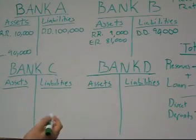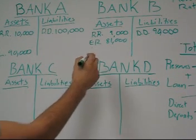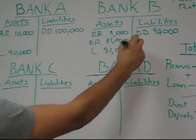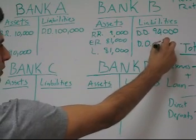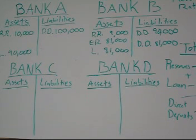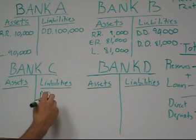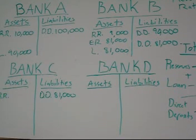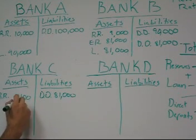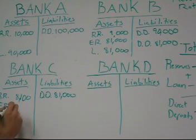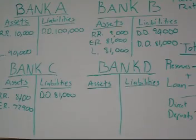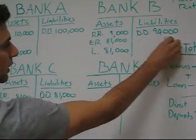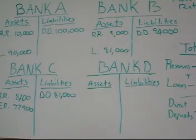That $81,000 isn't going to just sit there — they're going to loan it out. A guy named Pete comes along and asks for an $81,000 loan, and they give it to him. Pete gets a direct deposit for $81,000. He wants to buy a yacht, so he pays the yachtman. The yachtman deposits the $81,000 in Bank C. With a 10% reserve ratio, Bank C ends up with an excess reserve of $72,900.